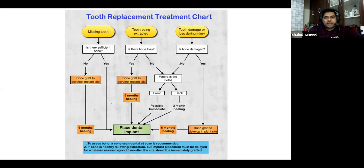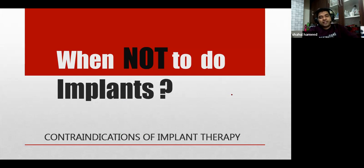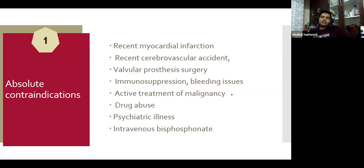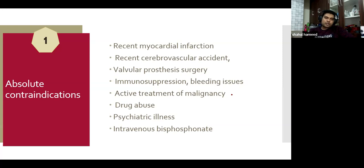Not in every condition can we place dental implants. Contraindications are few but include: recent myocardial infarctions, recent cerebrovascular accidents, immunosuppression, bleeding disorders, active treatment for malignancies, drug abuse, psychiatric illnesses, and intravenous bisphosphonate therapy. These are absolute contraindications. The word 'recent' refers to within six to eight months, after which they may become relative rather than absolute contraindications.